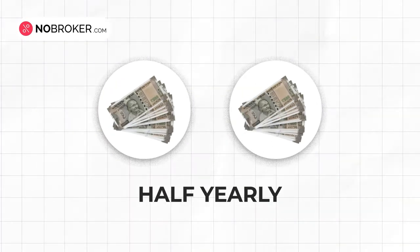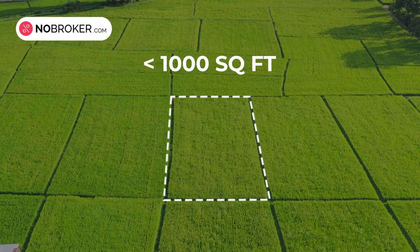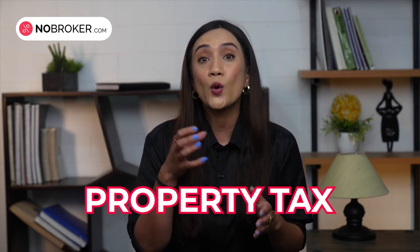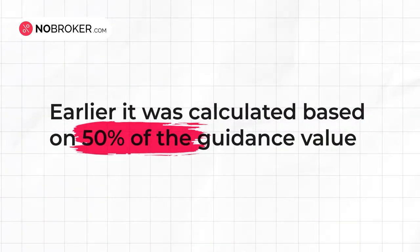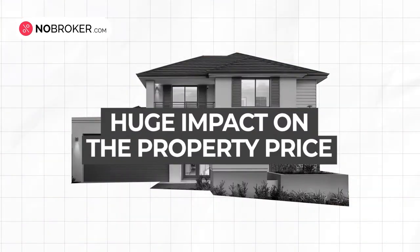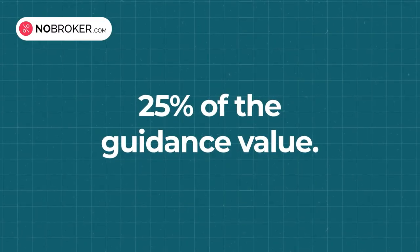You can pay the property tax in two ways: pay the whole amount in one go, or pay half early. If you have a vacant site that is less than 1,000 square feet, you are now exempted from paying property tax. For others, the basis of computing property tax has been reduced — earlier it was calculated at 50% of the guidance value, and now it has dropped to 25% of the guidance value. The guidance value is the minimum amount at which a property transaction can be registered formally.